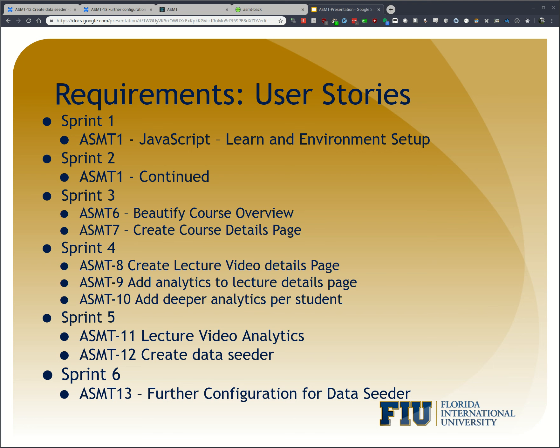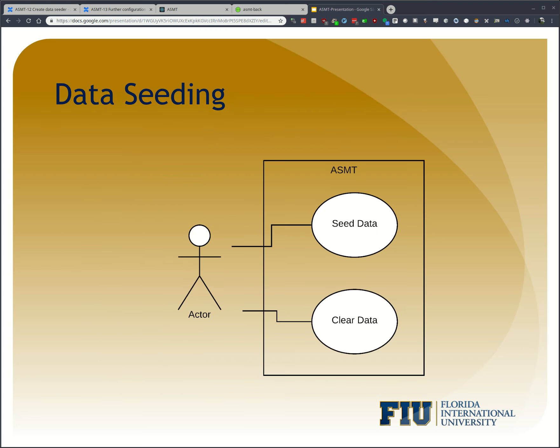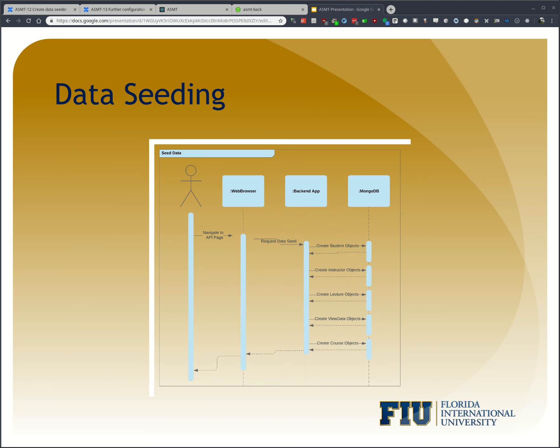Let's move on to the use cases. The first and simplest is data seeding. An actor is able to seed data, as well as clear the data that's in the database. Once a request to seed the data is created, the back-end app goes ahead and creates all the objects needed. In this case, the user doesn't even interact with the front-end; they'd be interacting with the back-end Swagger API.